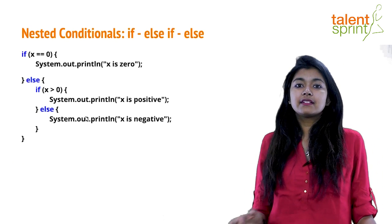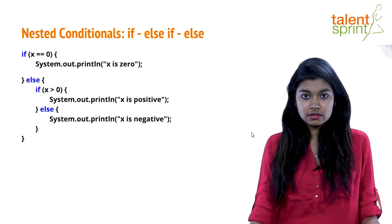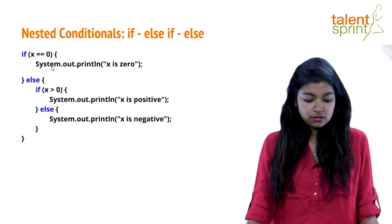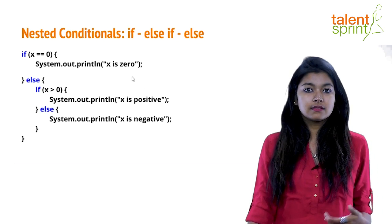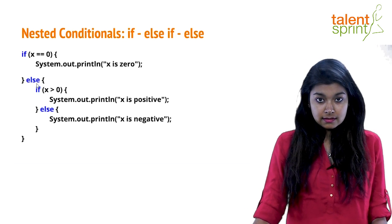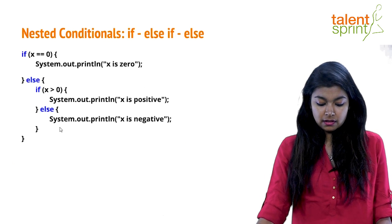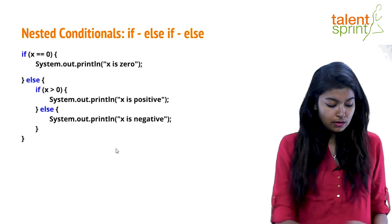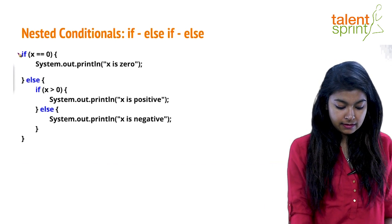Similarly we have nested conditionals. In the example shown on the screen, if x is equal to 0 you say x is 0 - just system.out.println x is 0. Else if x is greater than 0 you say x is positive, or else you say x is negative. So right here what you can see is this if-else is the main.